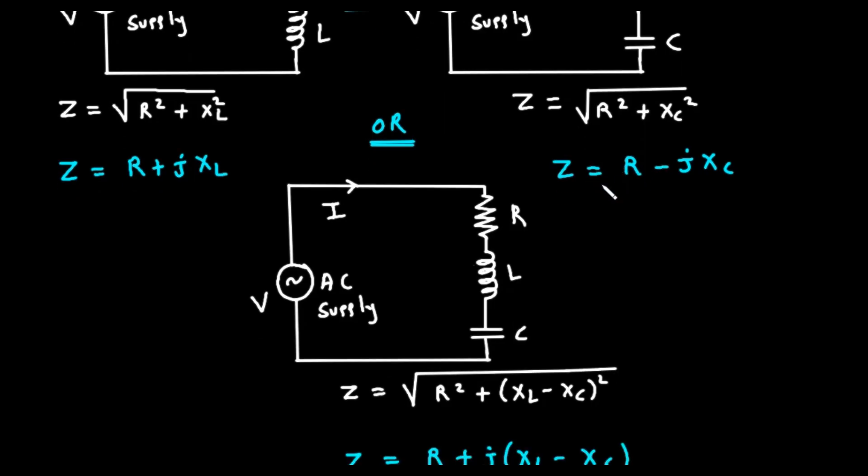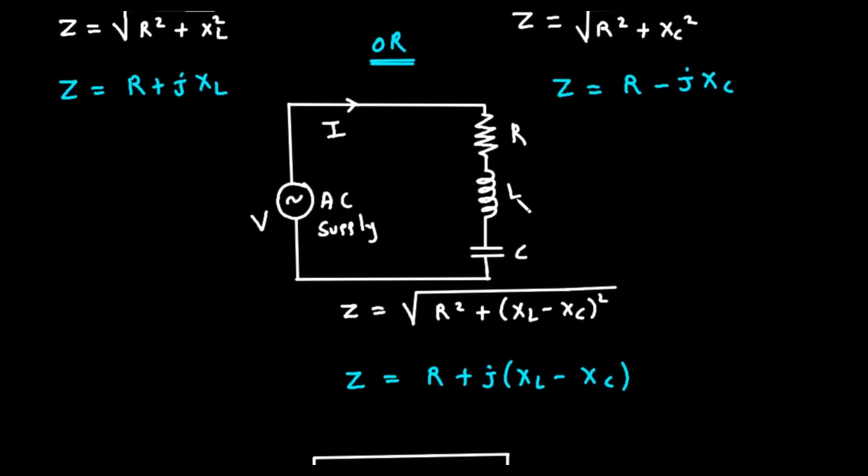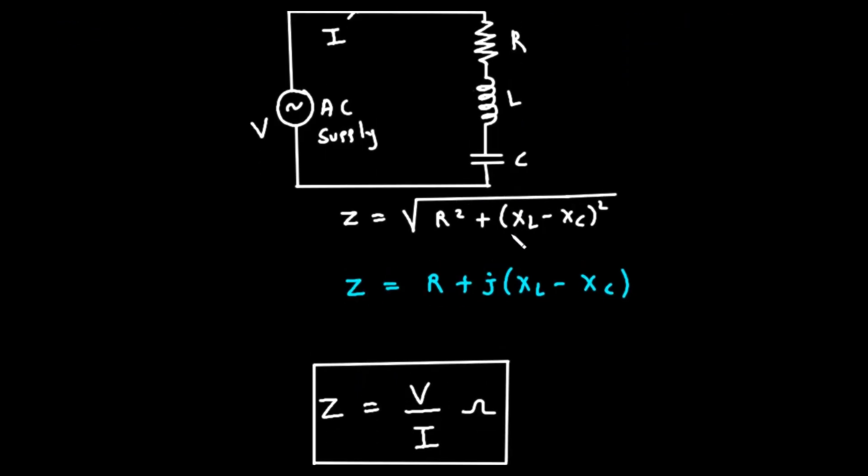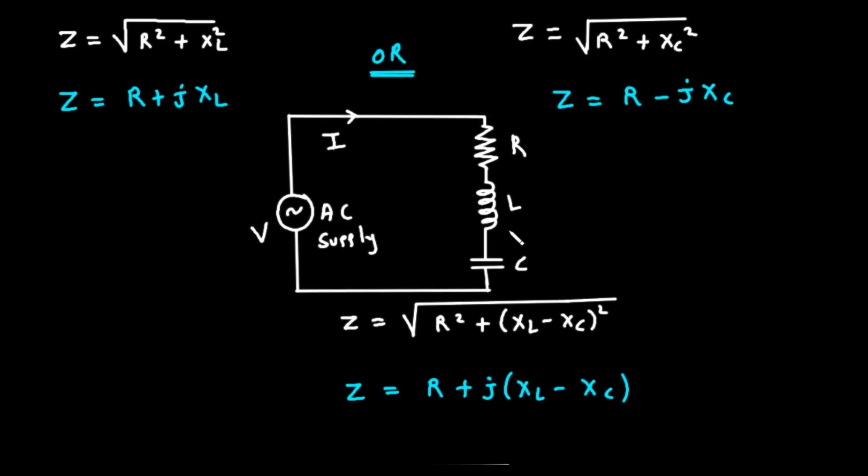Finally, we have the most complete case, an RLC circuit, with a resistor, an inductor, and a capacitor all in series. In this circuit, the inductive reactance and the capacitive reactance directly oppose each other. The total reactance is their difference, X sub L minus X sub C.